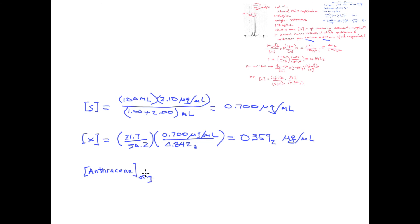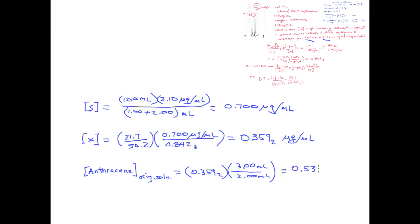So what is that concentration? We take the value we just calculated and account for the dilution factor. There were 3 milliliters total and the original sample size was 2 milliliters. That ratio of 3 to 2 gives us a net concentration of 0.5388 micrograms per milliliter. Rounding to 3 significant figures, we have 0.539 micrograms per milliliter.